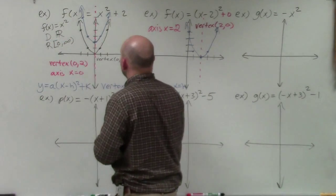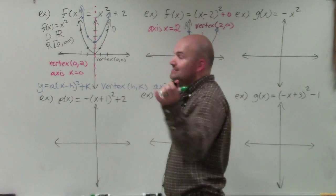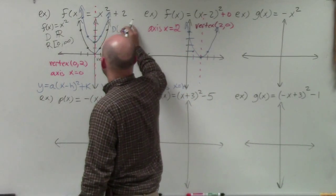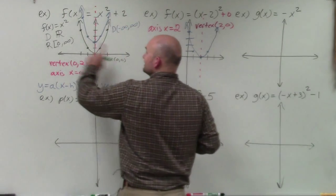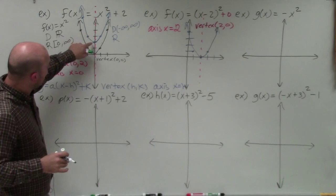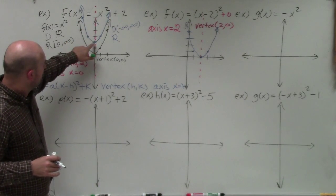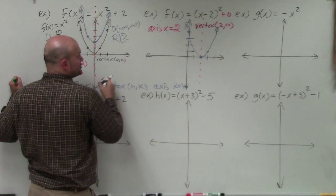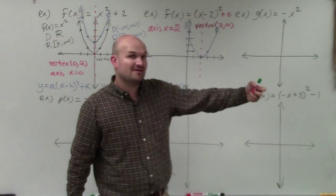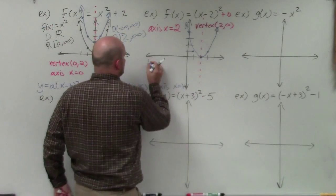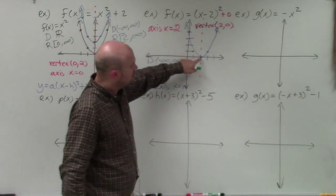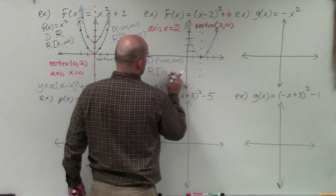Looking at the blue graph, the domain is always going to be all real numbers regardless of shifting left, right, up, or down — negative infinity to infinity. Whereas the range: the lowest value the blue graph reaches is not 0 but its k-coordinate, which is 2. So the lowest y-value is 2, and the highest is infinity. For the other shifted graph, the domain is all real numbers and the range is from 0 to infinity.